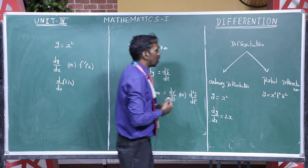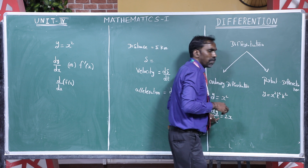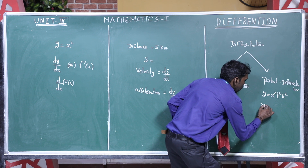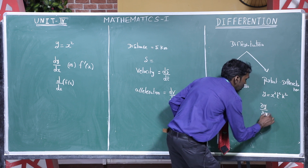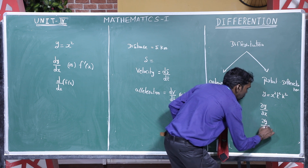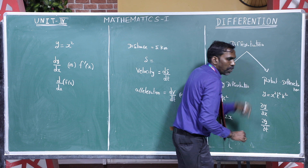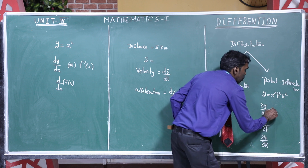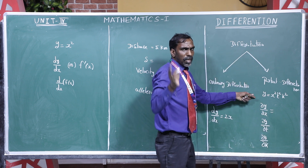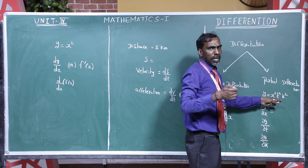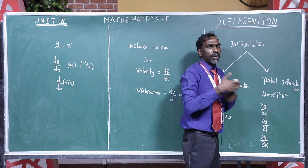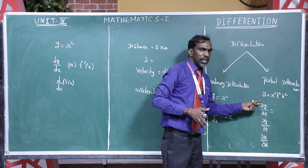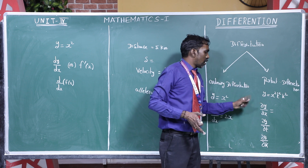For partial differentiation, we use the symbol dou (∂). If ordinary differentiation uses dy by dx, partial derivative uses dou y by dou x, then dou y by dou t, and dou y by dou k — one for each of the three independent variables. When differentiating with respect to x, the other variables are treated as constants.